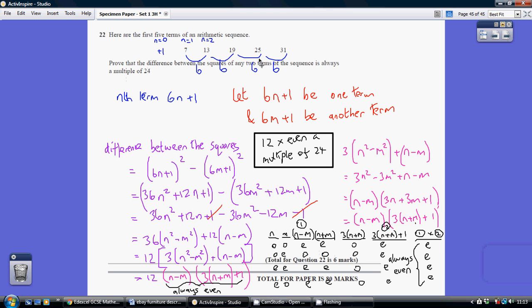So hopefully the bit in blue is fairly straightforward. The nth term here is 6n plus 1. So for example, this is the fifth term. That fifth term comes from being 6 times 5 is 30 plus 1 is 31. So establishing that the nth term expression is 6n plus 1 is one term.